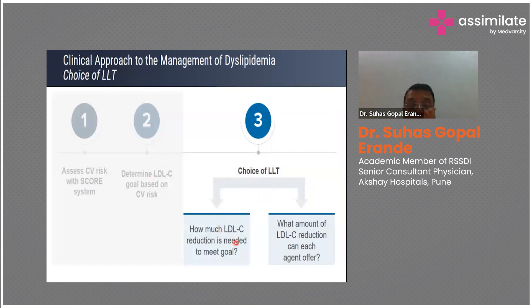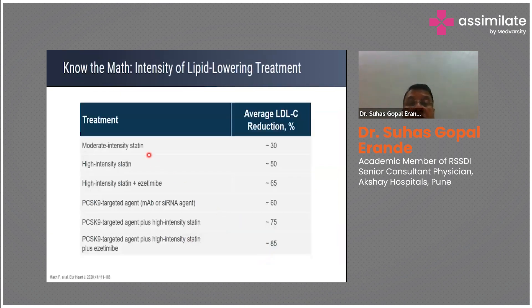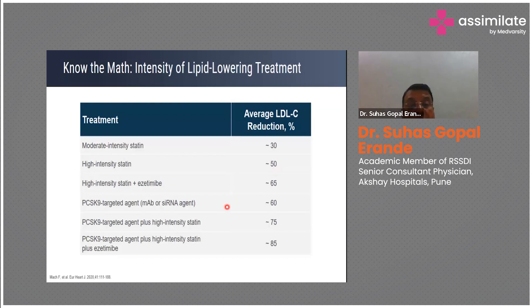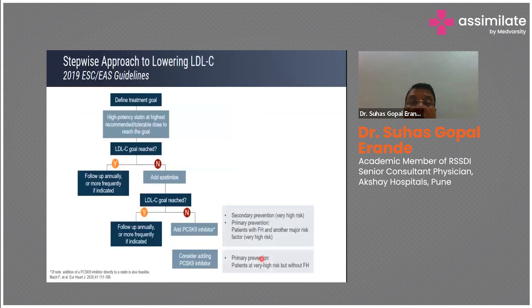The choice of lipid-lowering therapy depends on how much expected LDL lowering that drug can offer. Moderate-intensity statins: ~30% LDL lowering. High-intensity statins: 50% or more. High-intensity statin plus ezetimibe: 65%. PCSK9-targeted agent alone: 60%. PCSK9 plus high-intensity statin: 75%. PCSK9 plus high-intensity statin plus ezetimibe: up to 85% LDL reduction.